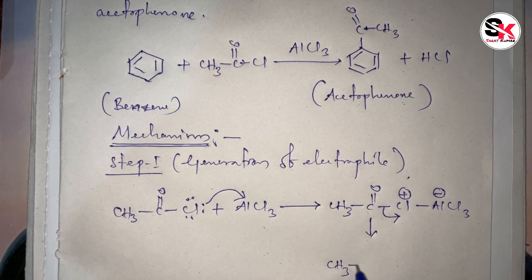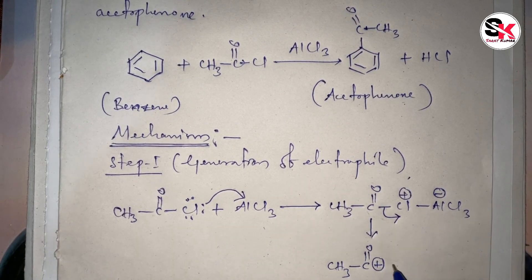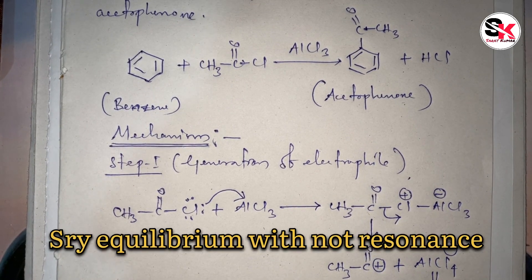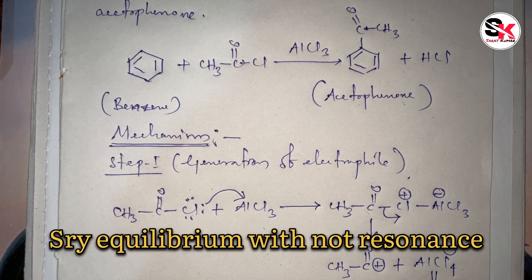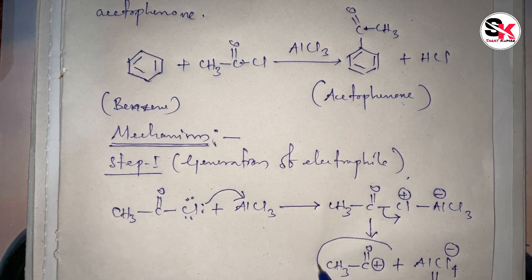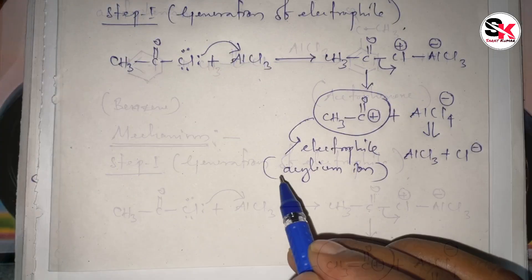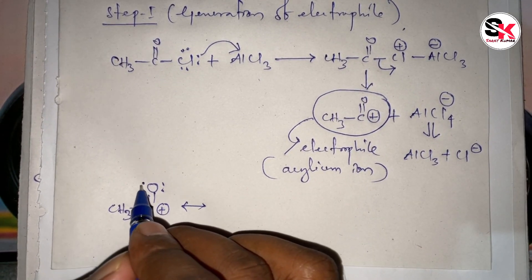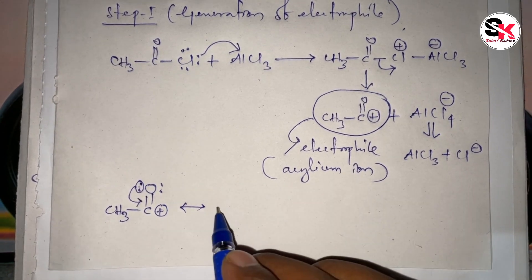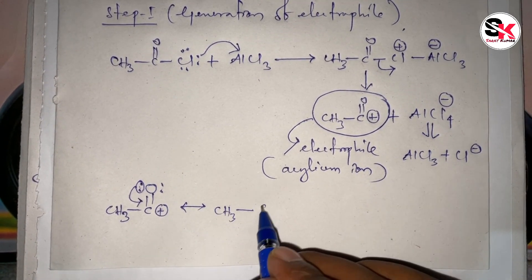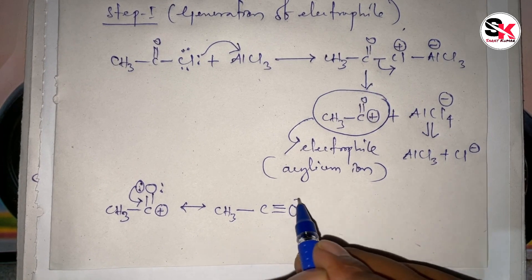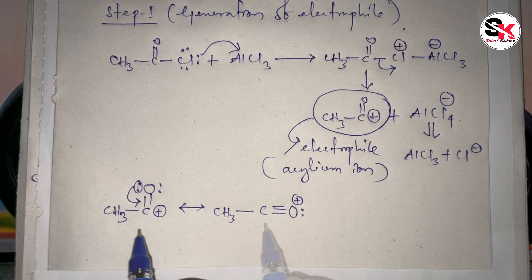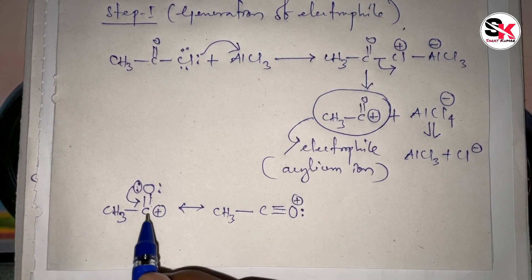This generates the acylium ion (CH3-C≡O⁺) plus AlCl4⁻, which is in resonance with AlCl3 plus Cl⁻. This electrophile, the acylium ion, is resonance stabilized. When the lone pair migrates, we get another resonating structure. So we have two resonating structures for the electrophile.